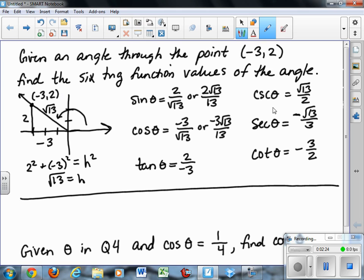Just draw the angle, find the missing side, which in this case would be the reciprocal, and write the six trig function values.